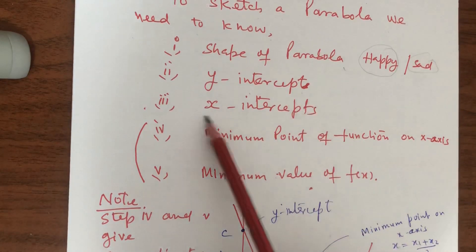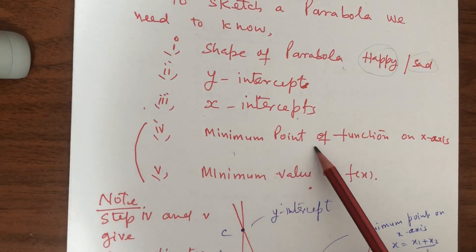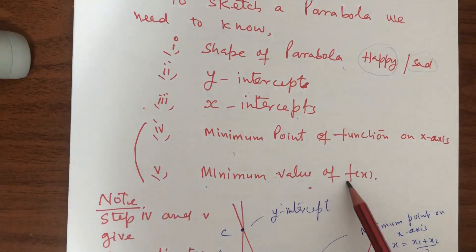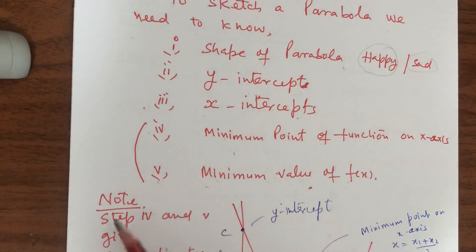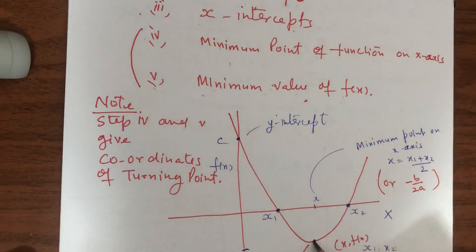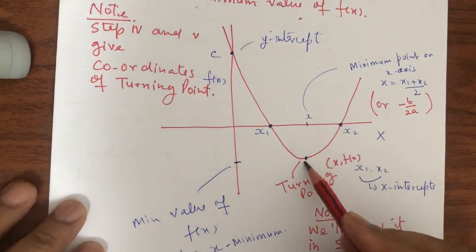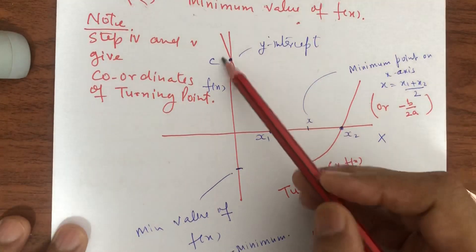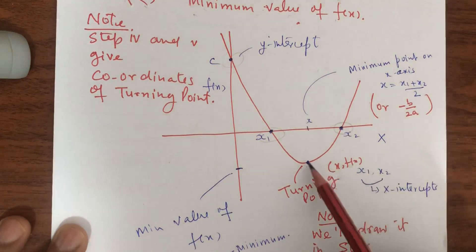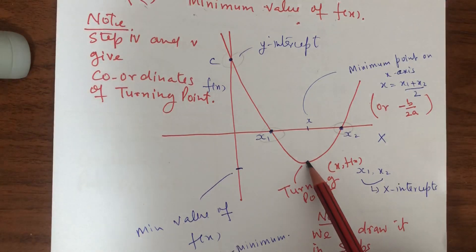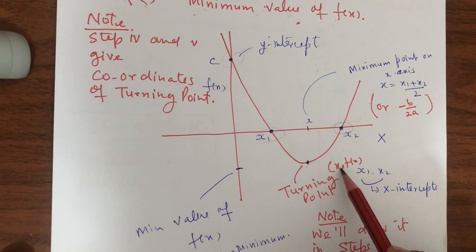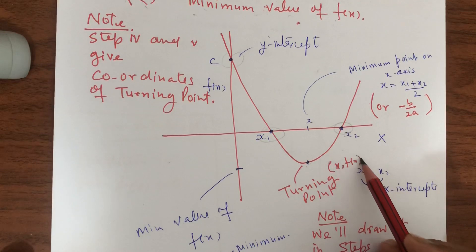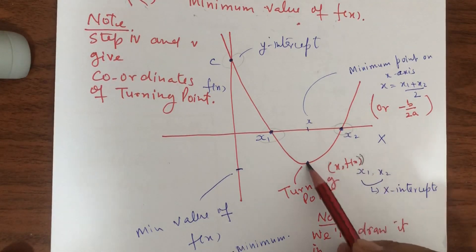We need to know the y-intercept, the x-intercepts x1 and x2, and the turning point. The turning point coordinate is given by the minimum x value paired with its corresponding f(x) value. This pair gives us the coordinate of the turning point on the graph.